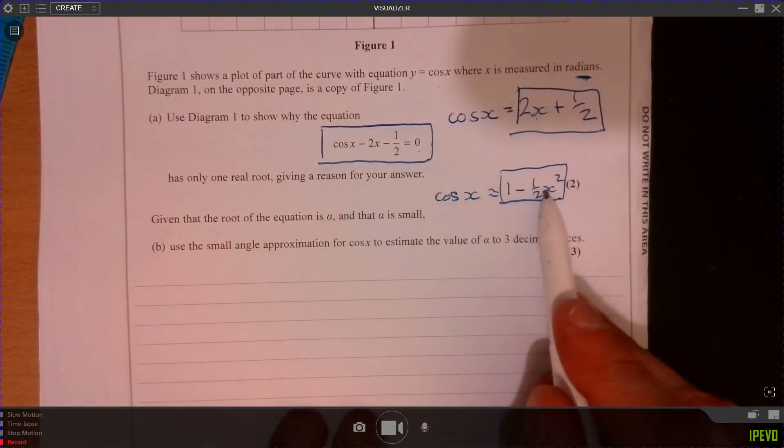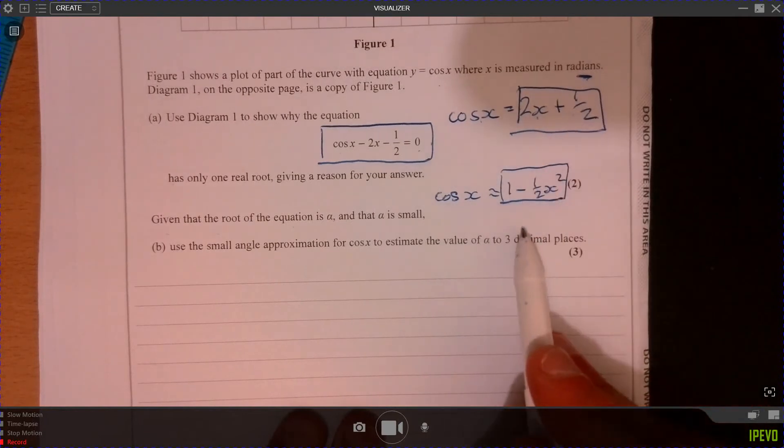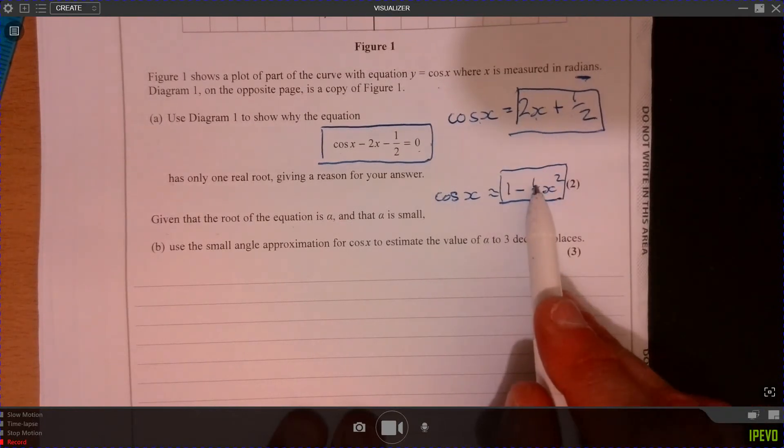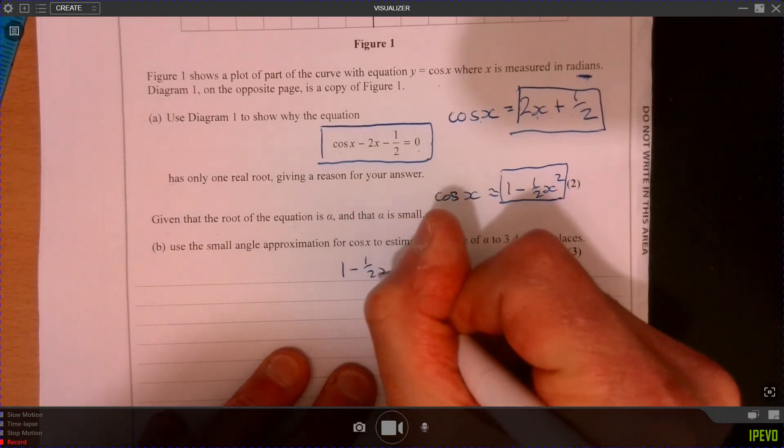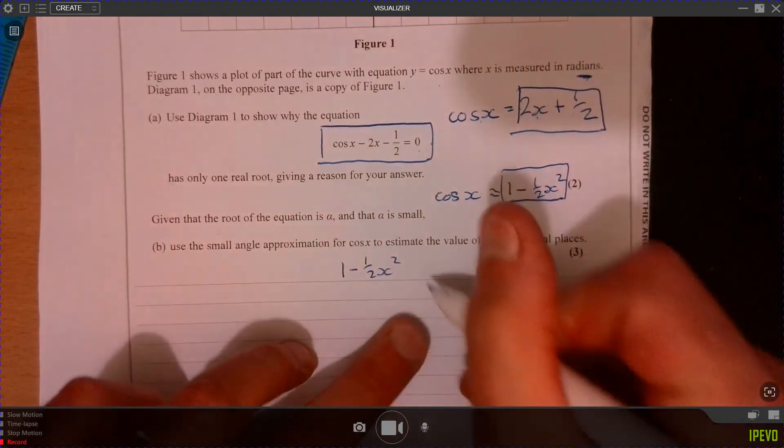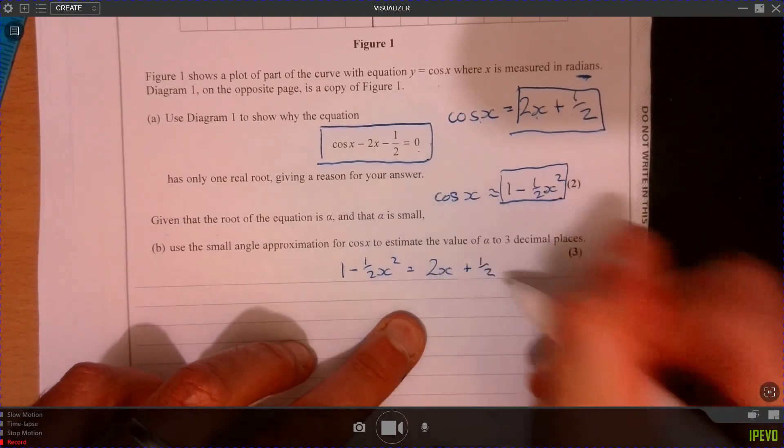So what we're going to do is we're just going to rewrite this, but put this in. So let's see what happens. So 1 minus half x squared equals 2x plus a half.